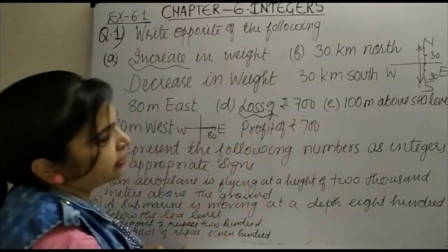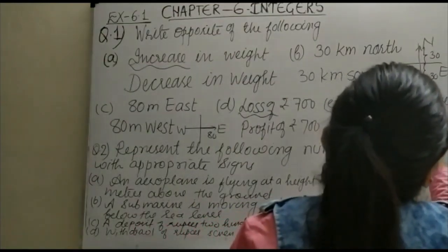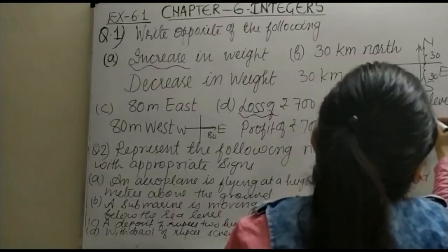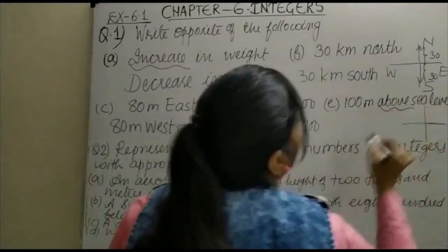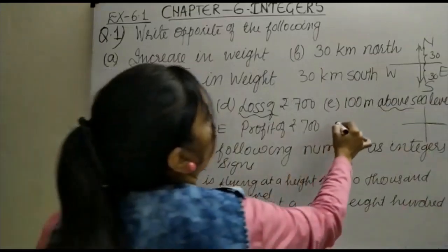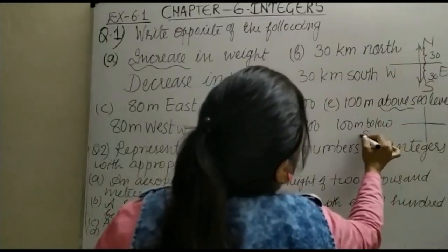Now, 100 meter above sea level. Suppose this is your sea level. If it is above, then obviously the opposite of above will be below. So it is 100 meter below sea level.